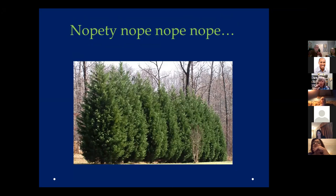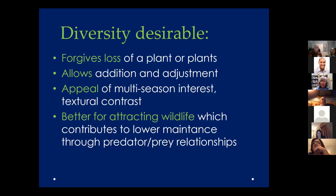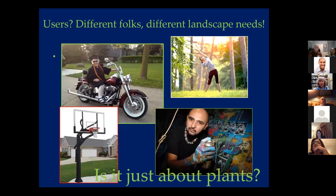We see monoculture screens so often, and as an extension agent you just groan — because either disease will start taking them down, like Seiridium canker has done with so many Leyland cypress, or if just one plant gets struck by lightning, you can't find the right replacement. Diversity forgives the loss of plants. It allows additions and adjustments. Different seasons of interest. It's just better for us and for the world.